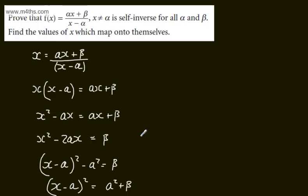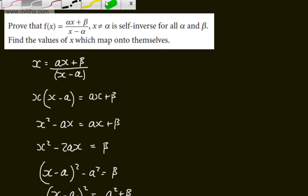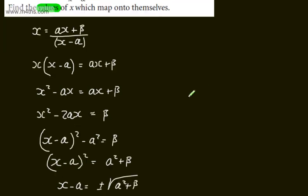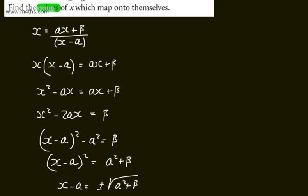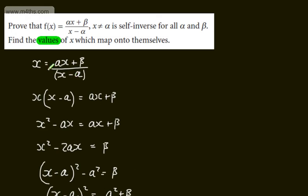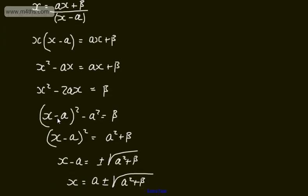So here we have the values of x, and we can see quite clearly our quadratic has two possible solutions: alpha plus or minus the square root of alpha squared plus beta. So you could have alpha plus the square root of alpha squared plus beta, or alpha minus the square root of alpha squared plus beta. All we've done is set f of x equal to x, as this maps itself back onto x, and solved the quadratic by completing the square.